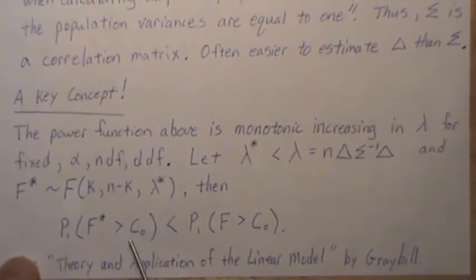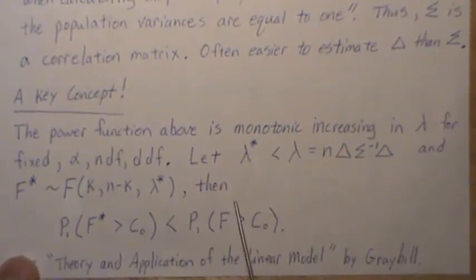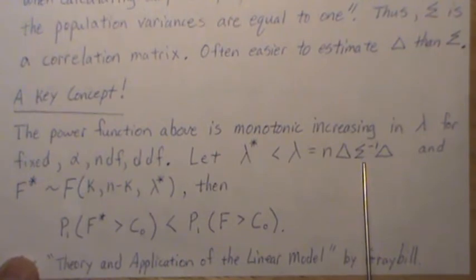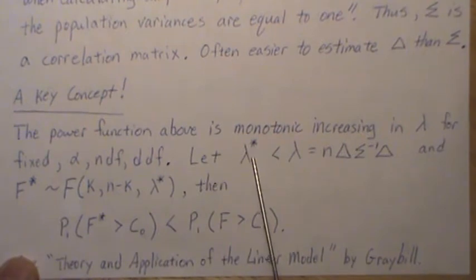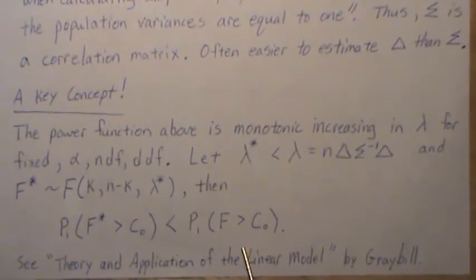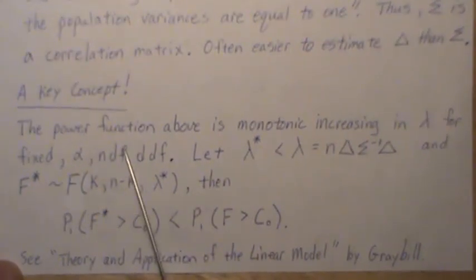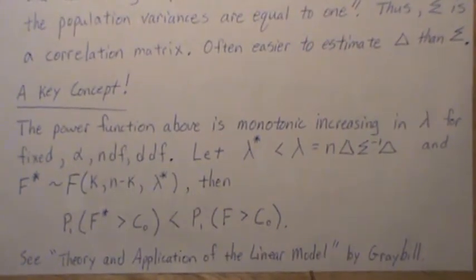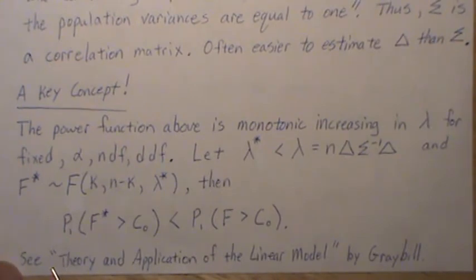And so what we do is to calculate this power, we need to know this covariance matrix, which can be tough to know sometimes. But if we can pick a smart lambda star that's easy to estimate, and we calculate power using it, then it's guaranteed that we have the correct power for the original test. And so this key concept about the monotonicity of the power function, I point you to Theory and Application of Linear Models by Graybill.